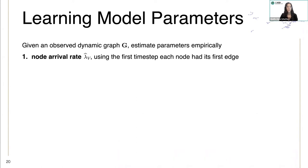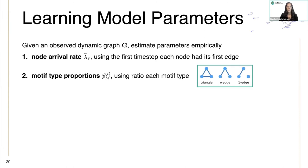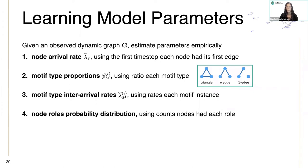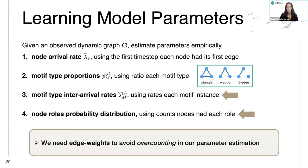The parameters that we learn: first is the node arrival rate, and we estimate it using the first time step each node had its first edge. Then we estimate the motif type proportions using the ratio of each motif type in the network. We estimate the motif type interval rates using the rates of each motif instance. Then the node roles probabilities using the counts that nodes had each role. And since we don't observe the motif memberships, we'll need edge weights so that we can avoid over-counting in the parameter estimation.